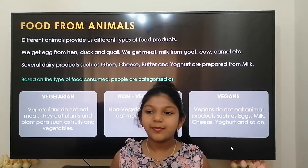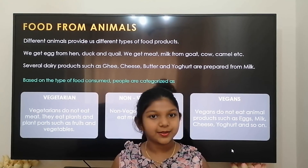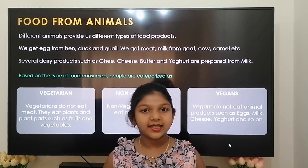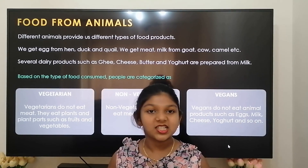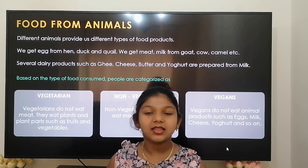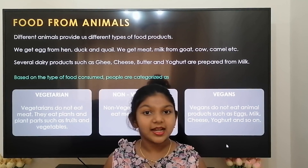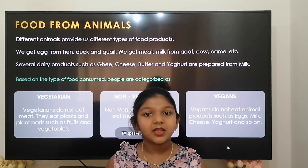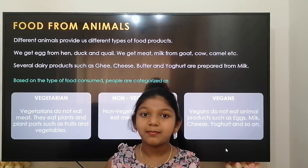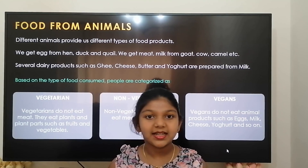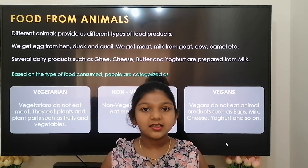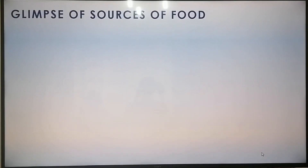Next, we are going to see about food from animals. Human beings consume a variety of animal products as food. Different animals provide us with different types of food products. We get eggs from hen, quail, duck, etc. We get meat from cow, goat, etc. We get milk from cow, goat, camel, etc. Several dairy products such as butter, ghee, and cheese are obtained from milk. Based on the food consumed, people are categorized into vegetarian and non-vegetarian. Vegetarians do not eat meat; they eat plants and plant products such as fruits and vegetables. Non-vegetarians primarily eat meat and other animal products. Both consume milk and milk products. However, vegans do not even eat animal products such as eggs, butter, ghee, or cheese.